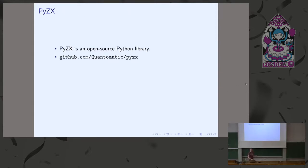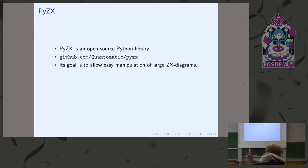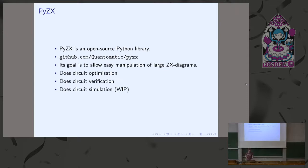This is a really powerful graphical tool to reason about quantum computation — instead of dozens of circuit equalities, just a few simple rules. This brings me to PyZX, which is an open source Python library available on GitHub. The goal is that you can import quantum circuits, transform them into large ZX diagrams, simplify those diagrams in an automatic manner, and hopefully do interesting things with them. We originally developed it for quantum circuit optimization, but we found it also works really well for quantum circuit verification — verifying that two circuits implement the same computation — and we're also working on quantum circuit simulation.